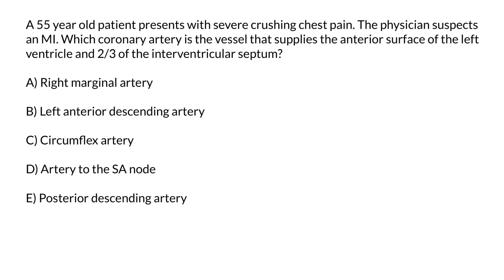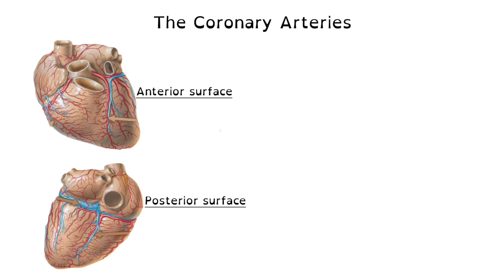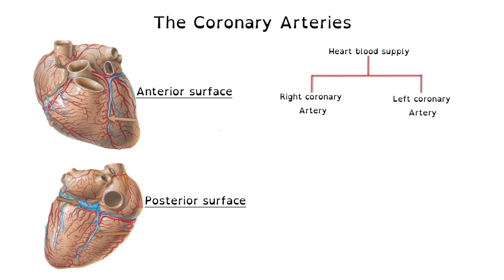A 55-year-old patient presents with severe crushing chest pain. The physician suspects an MI. Which coronary artery supplies the anterior surface of the left ventricle and two-thirds of the interventricular septum? To answer this question, you have to know the coronary arteries. Blood supply to the heart comes from the coronary arteries — a right coronary artery and a left coronary artery — both coming off the aorta, receiving blood supply during diastole.